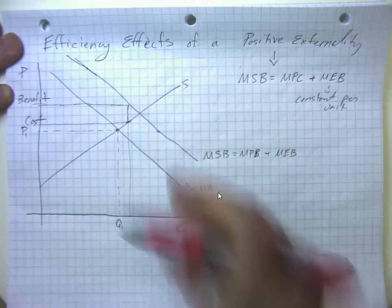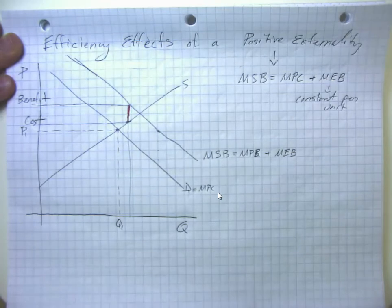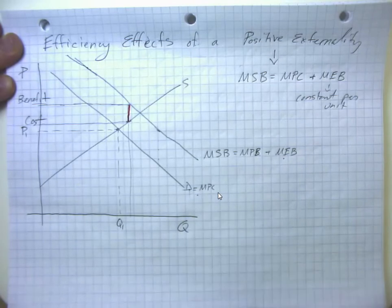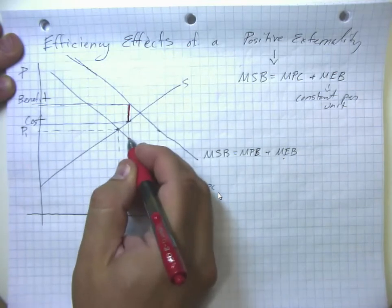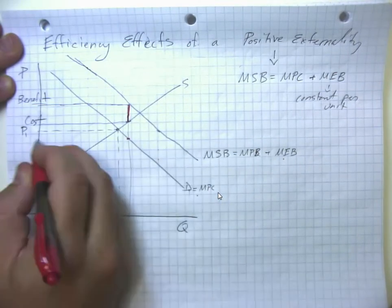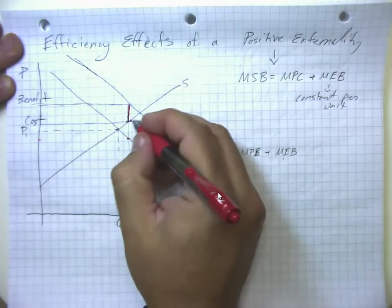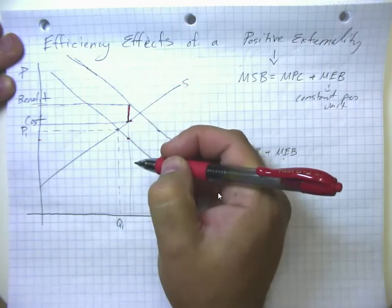If we created that unit, we would get this much gains from trade. Because some of the benefits are external, the private buyer doesn't have the incentive to demand that product. The private buyer here is only willing to offer a maximum of that price, and this seller has a minimum price to break even up there. So they're not willing to get together and make a trade voluntarily.